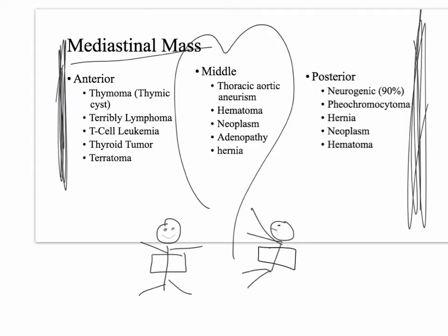For the middle mediastinum, you're looking at the thoracic aorta - things like an ascending aortic aneurysm, hematomas, neoplasm of any type including metastases, lymphadenopathy, or hernia. According to the recommended radiology text, anytime you see a middle mediastinal mass, think hernia first - it should probably be at the top of the list.